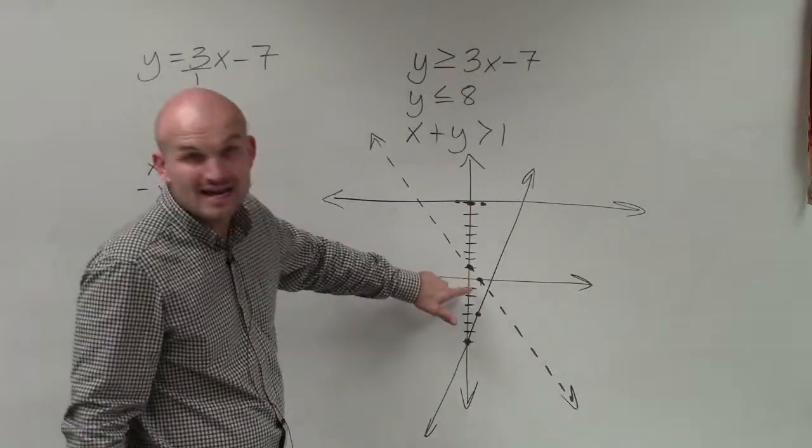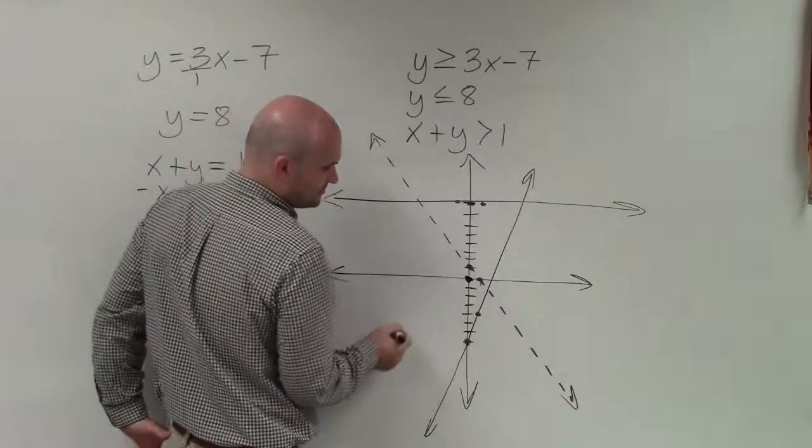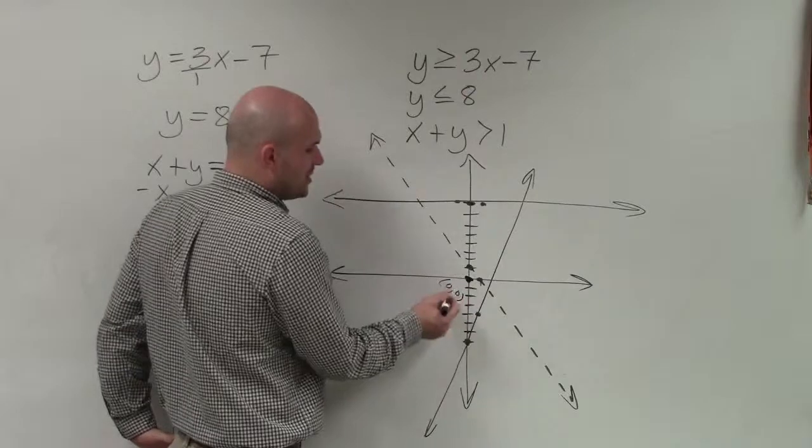Well, my test point 0, 0 is not intersected by any of them. So therefore, I am going to choose this test point, which is 0, 0. And I'm going to plug in.